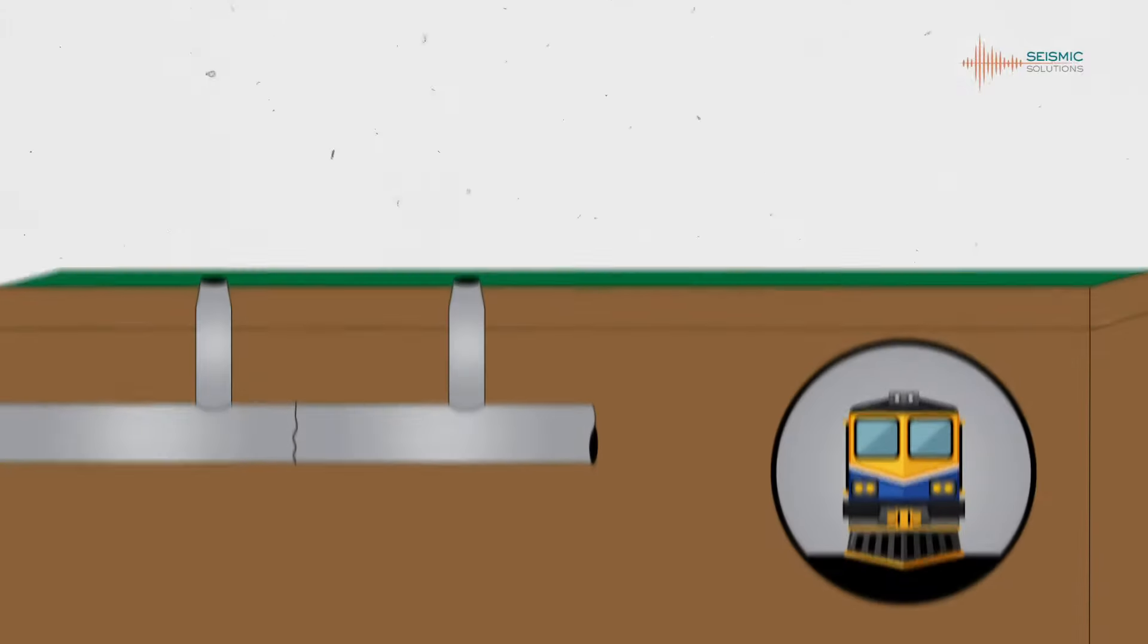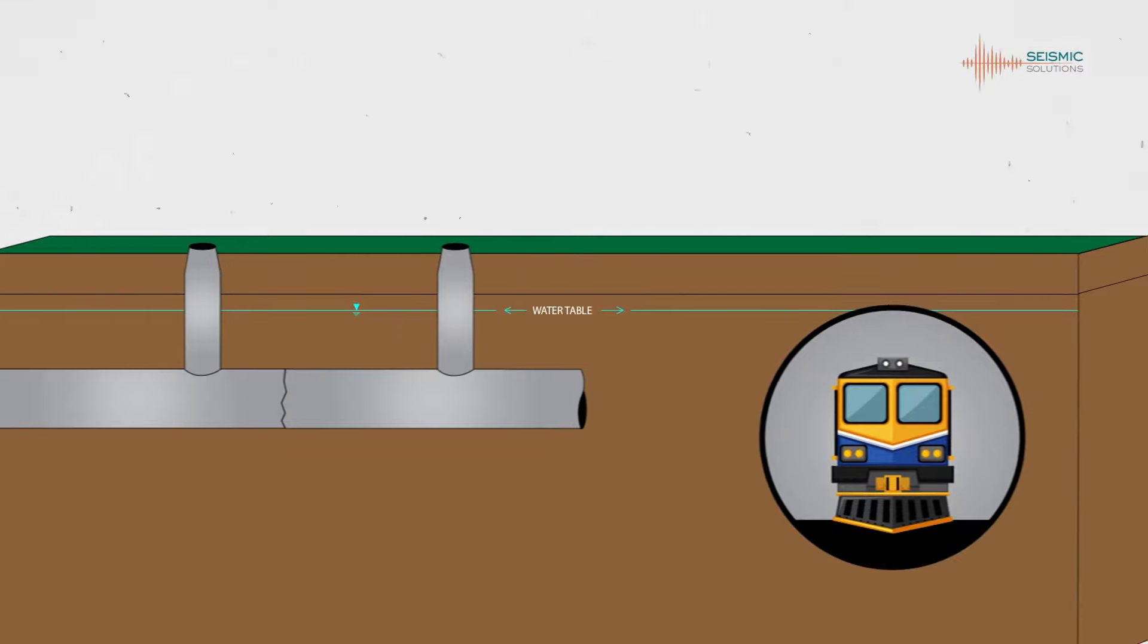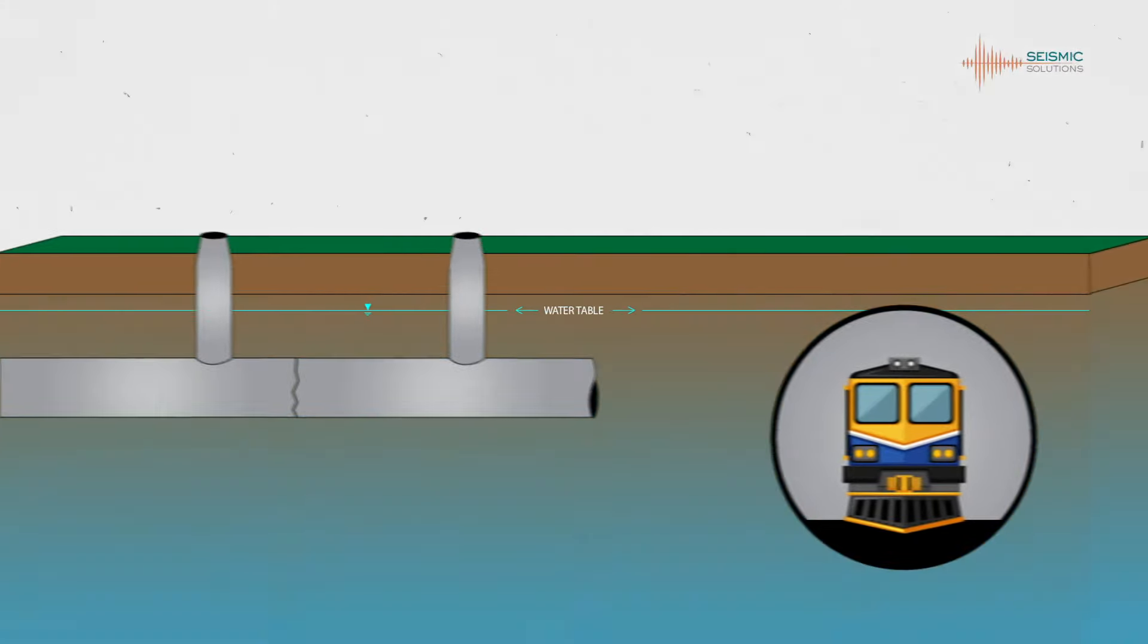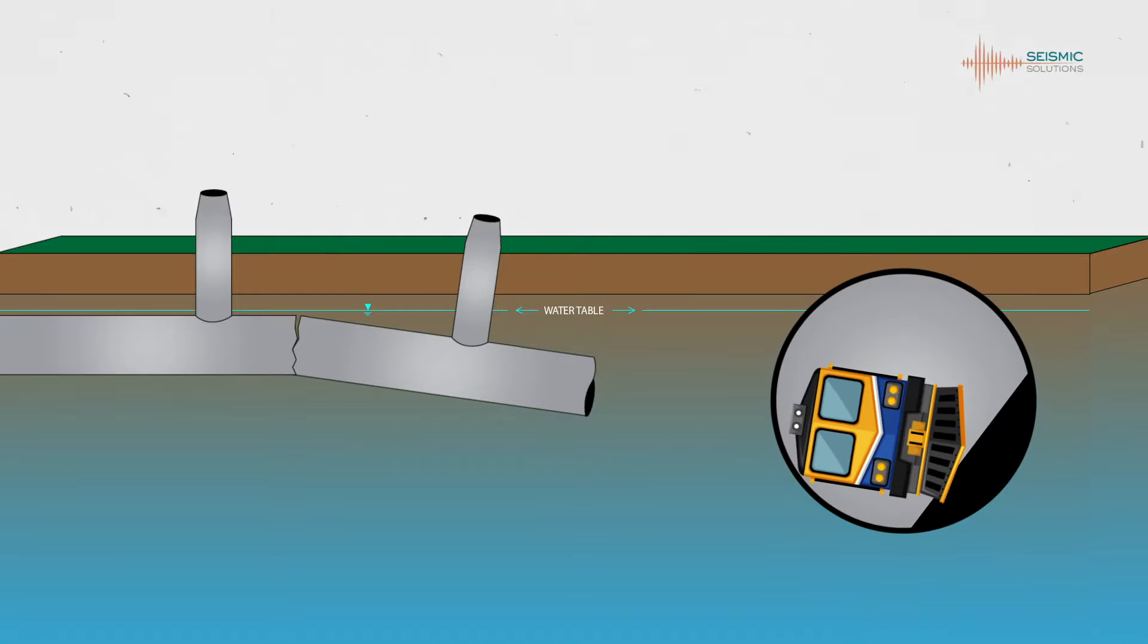Structures constructed in the ground below the water table rely on the weight and strength of the overburden soils. In seismic zones, liquefaction of near-surface sands causes these air-filled tunnels and utilities to float to the ground surface.